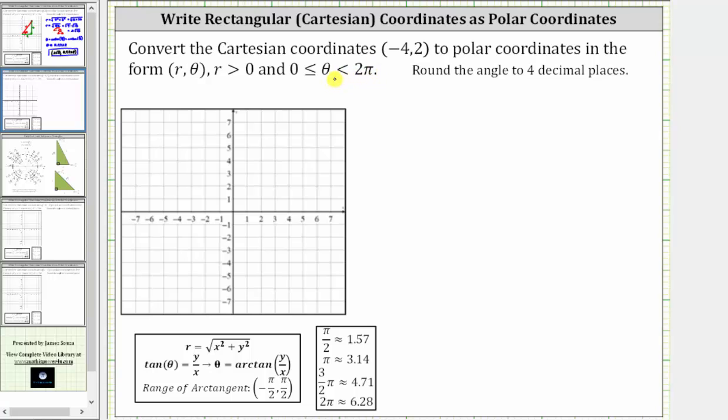Let's first plot the point on the Cartesian plane. From the origin, we move left four units and then up two units.